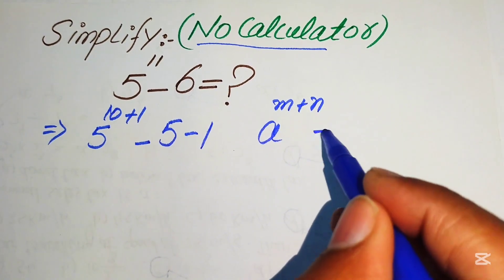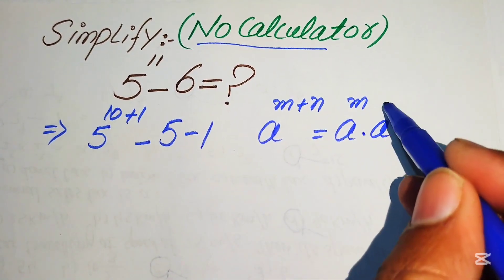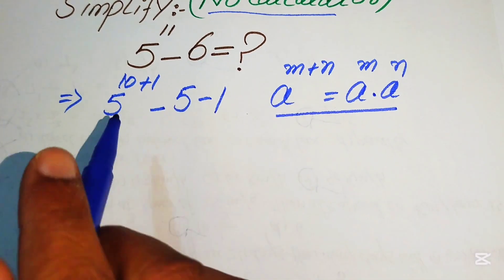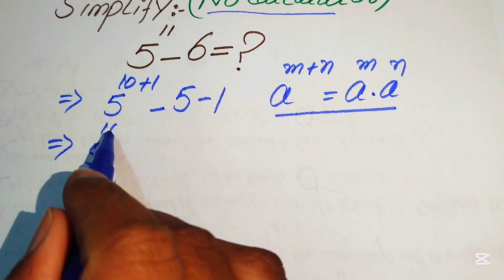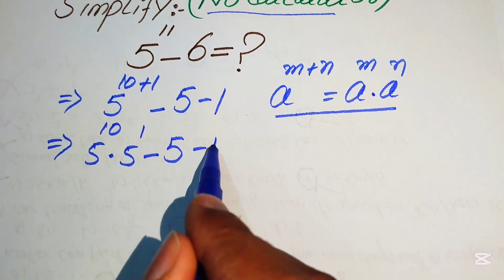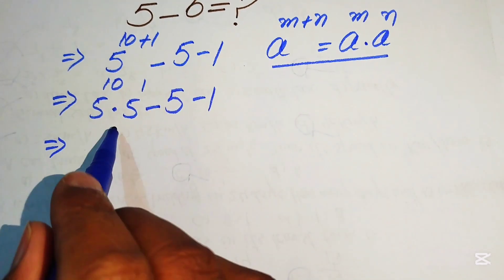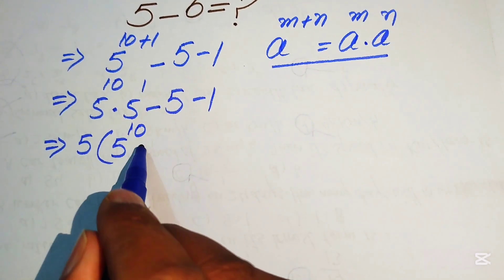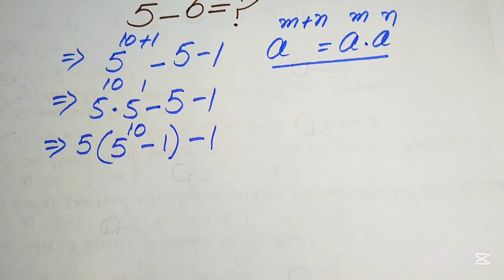We apply the exponential law: a to the power of m plus n equals a to the power of m times a to the power of n. Using this law on the first term, it becomes 5 to the power of 10 multiplied by 5 to the power of 1, minus 5 to the power of minus 1. Then we factor out 5 to the power of 10 from the first two terms, giving 5 to the power of 10 times the quantity 1 minus 1.